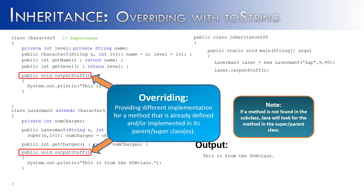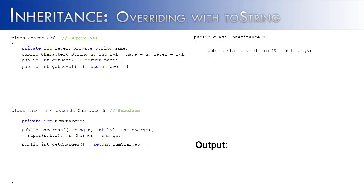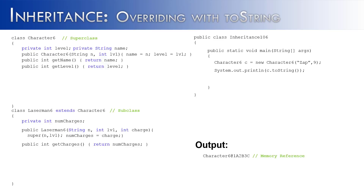Overriding can be found throughout Java, and one of the best examples is the toString method — not a method I made up like outputStuff. If I create an object of the superclass called C and say System.out.println(c.toString()), notice that Character6 is not explicitly extending any other class. But we're going to call toString — will it give an error or output something? It's going to output a memory reference showing where it's stored in memory, something like Character6@1a2b3c.